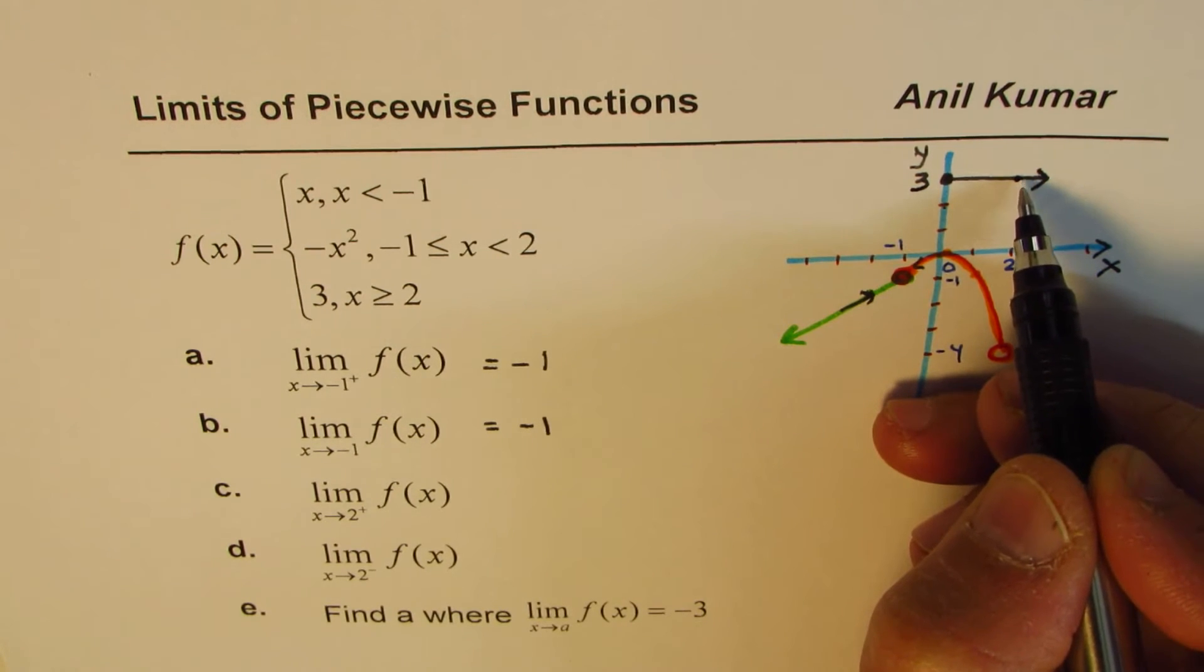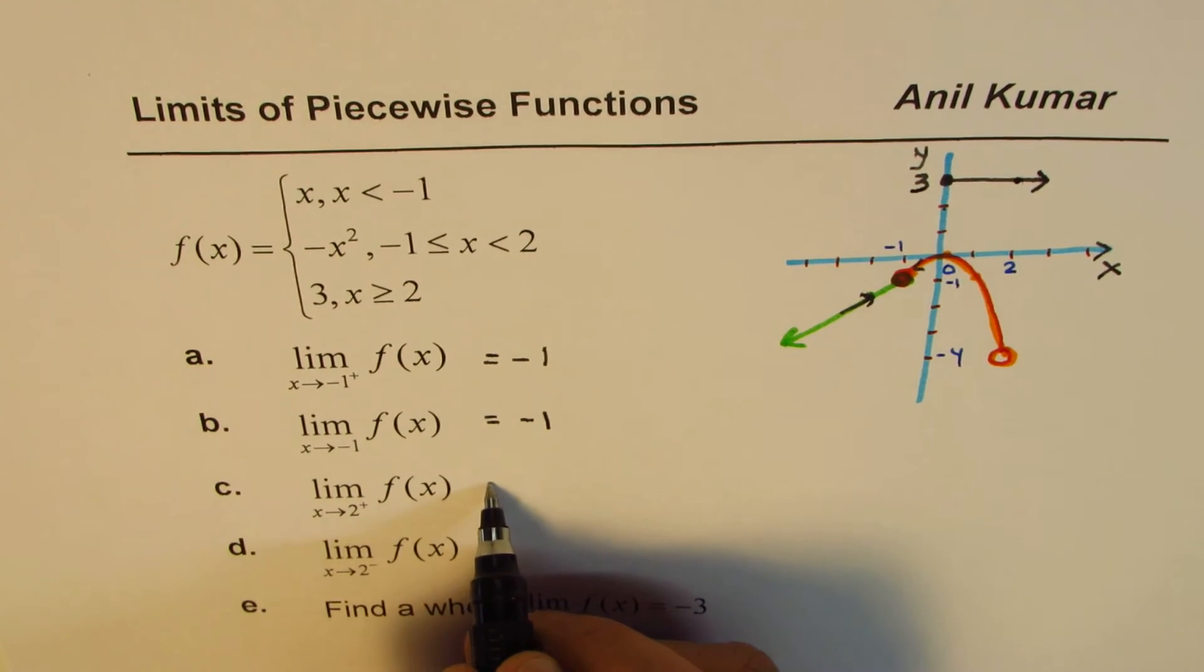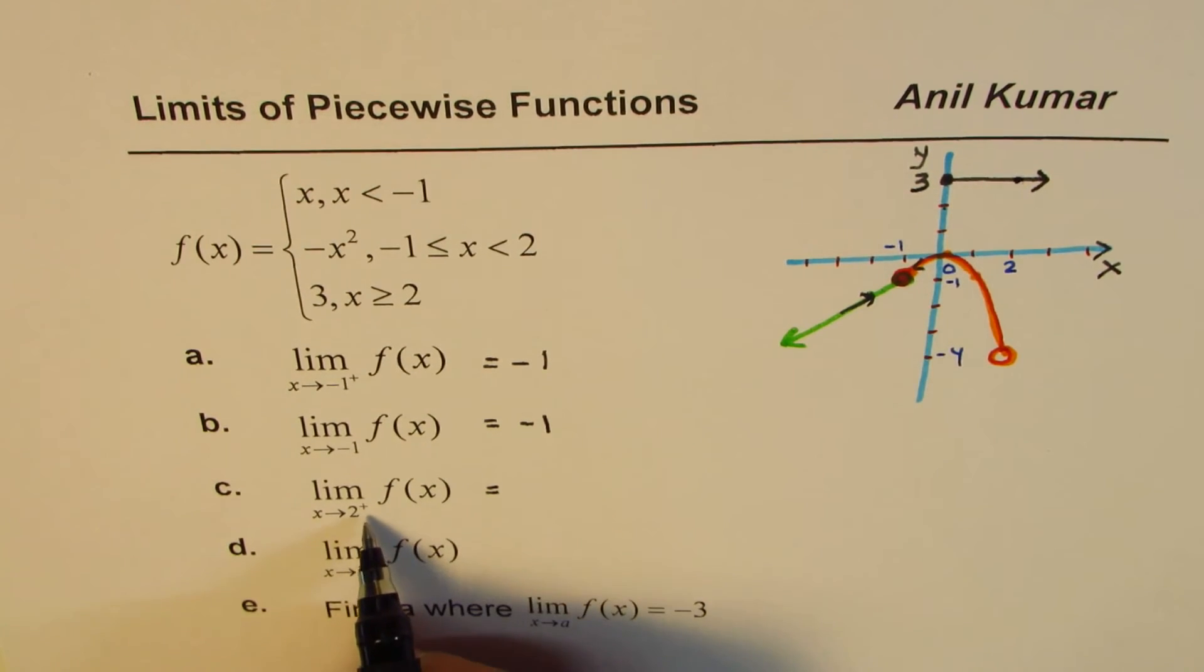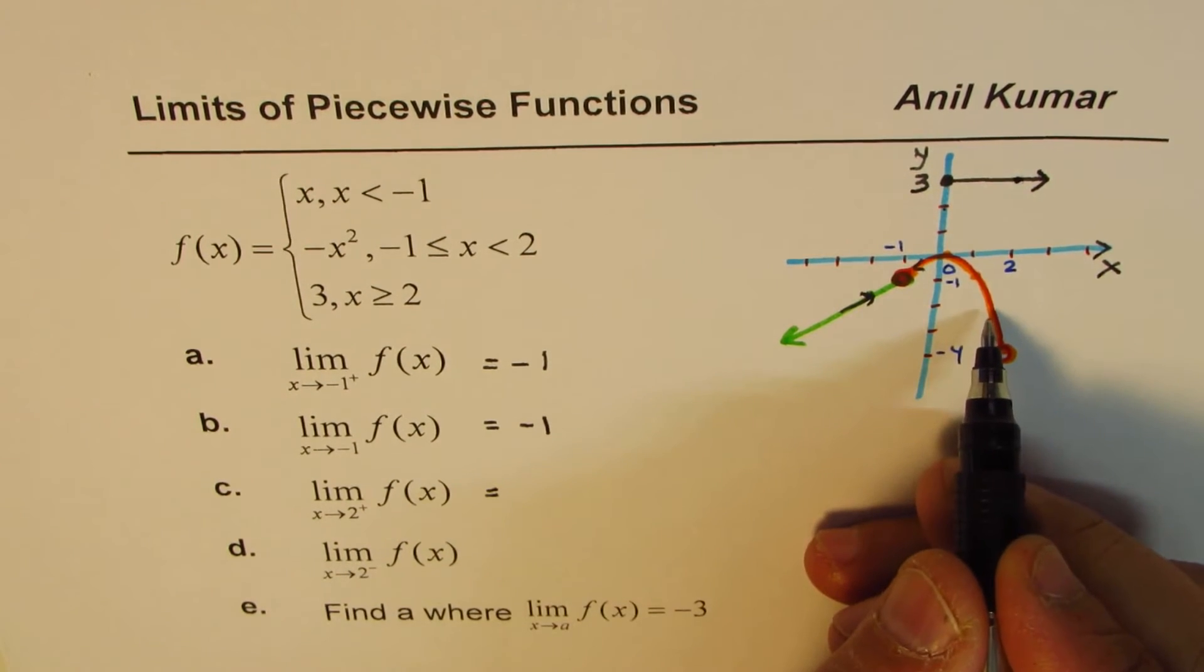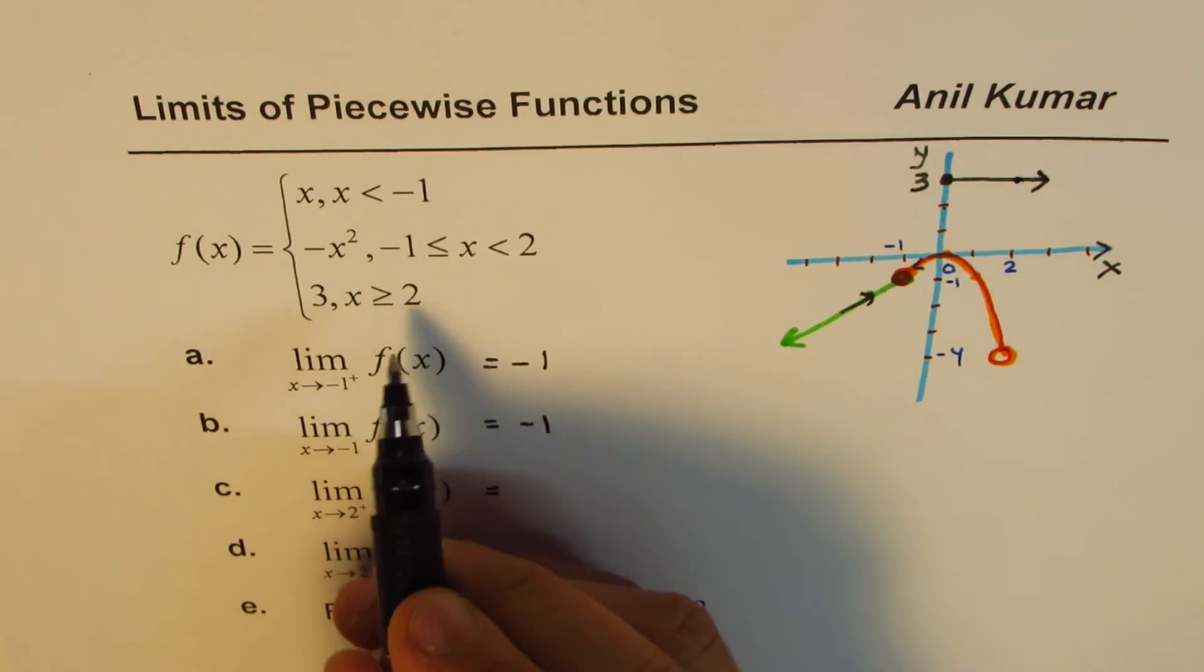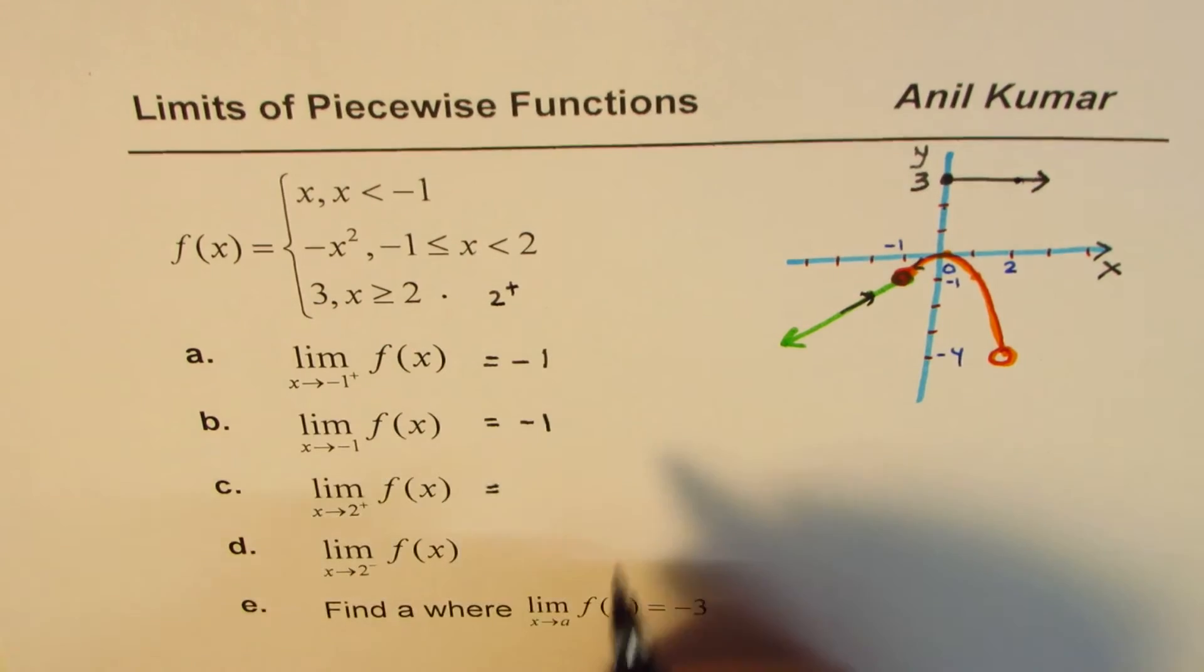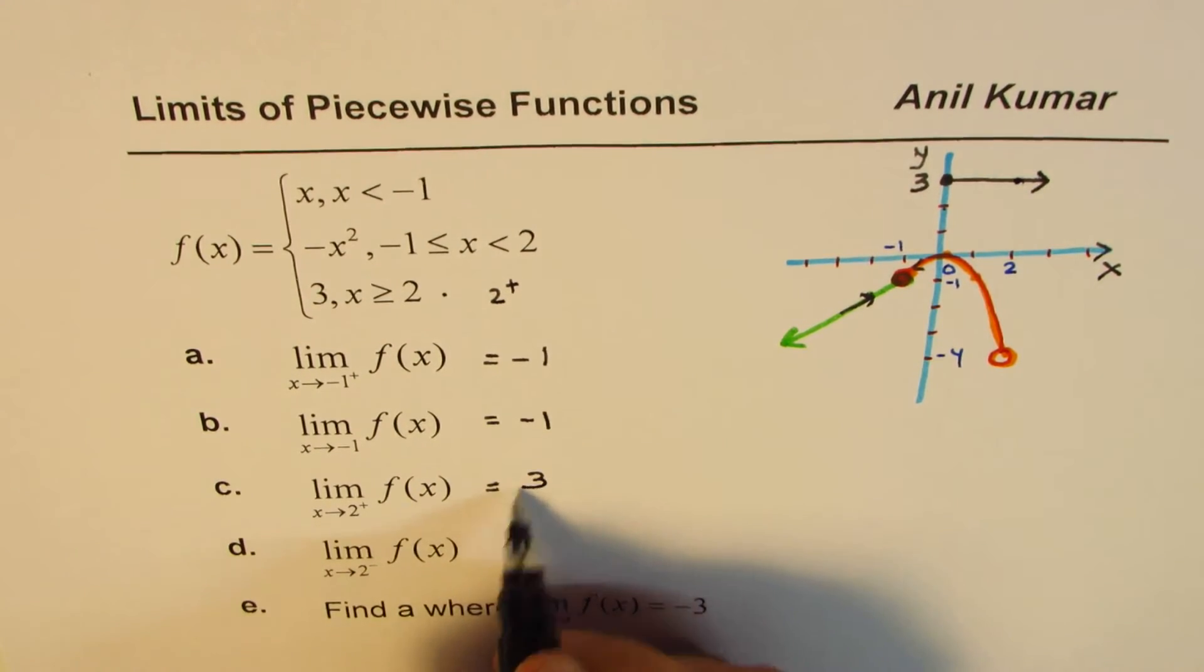So you approach which point? You approach the value 3. Do you see that? So you are approaching 3. So this answer is 2 from the right side. That means here. If it had been 2 from the negative, you would have been on the parabola, right? 2 from the right side means this. This is 2+. Do you see that? The value is 3. So this answer is 3 for you.